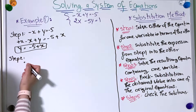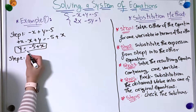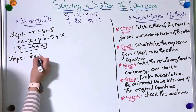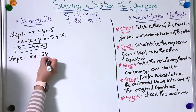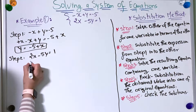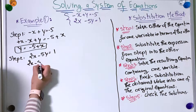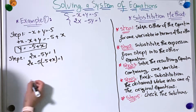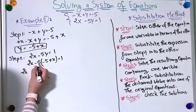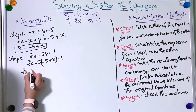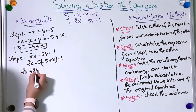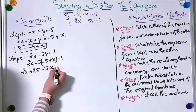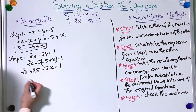In the second step, I'm going to take the expression and replace y in the second equation. So I have 2x minus 5y equals 1, which becomes 2x minus 5 times (minus 5 plus x) equals 1. That gives 2x minus 5 times minus 5, which equals plus 25, minus 5 times x, which equals minus 5x, all equal to 1.